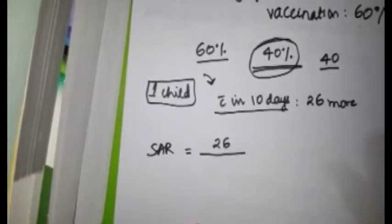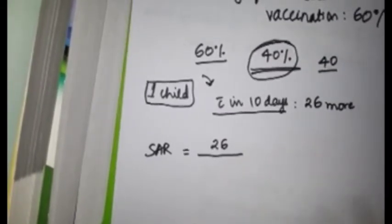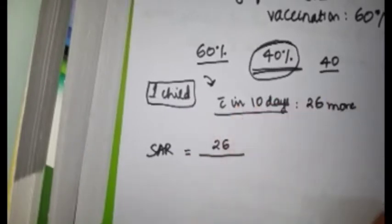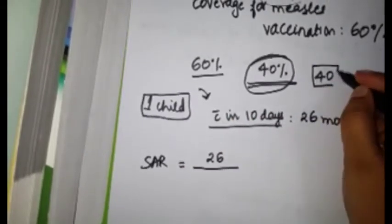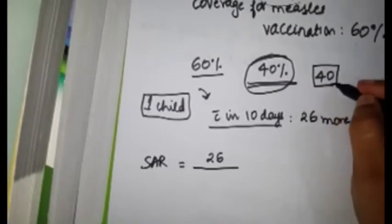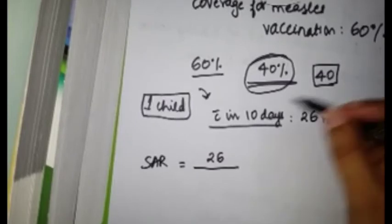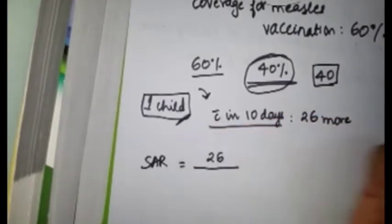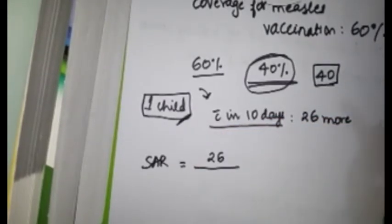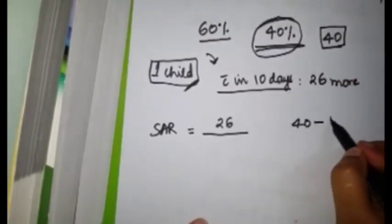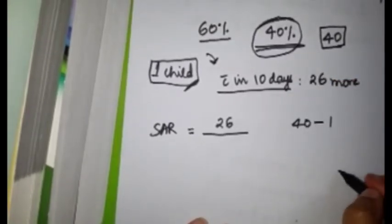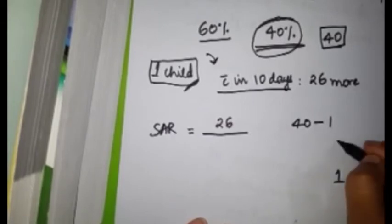Number of new cases within one incubation period is 26. Now calculate the number of susceptibles. Pay attention here—this is where most of you will go wrong. Most of you will generally tend to write 40 because these 40 are not vaccinated, right? But among the susceptibles, you should always subtract the primary case.